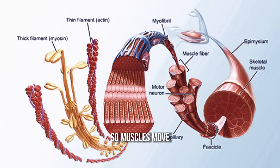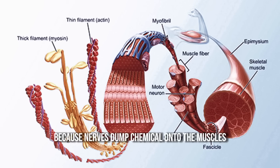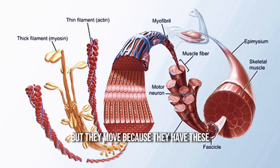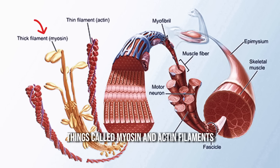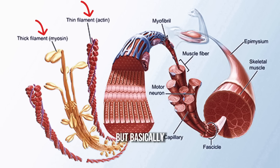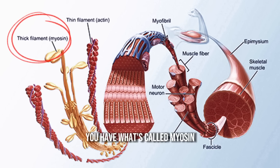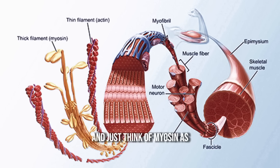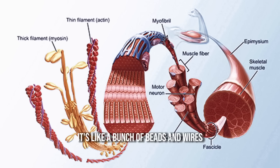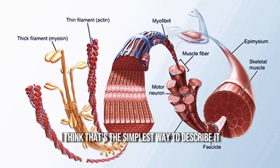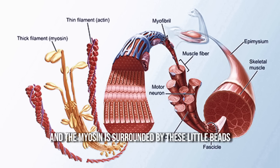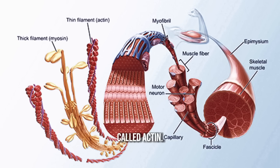Muscles move because nerves dump chemicals onto them, but they move because they have things called myosin and actin filaments. Along the length of the muscle, you have what's called myosin. Think of myosin as kind of like a wire — like a bunch of beads and wires that extend across the muscle. And the myosin is surrounded by these little beads called actin.